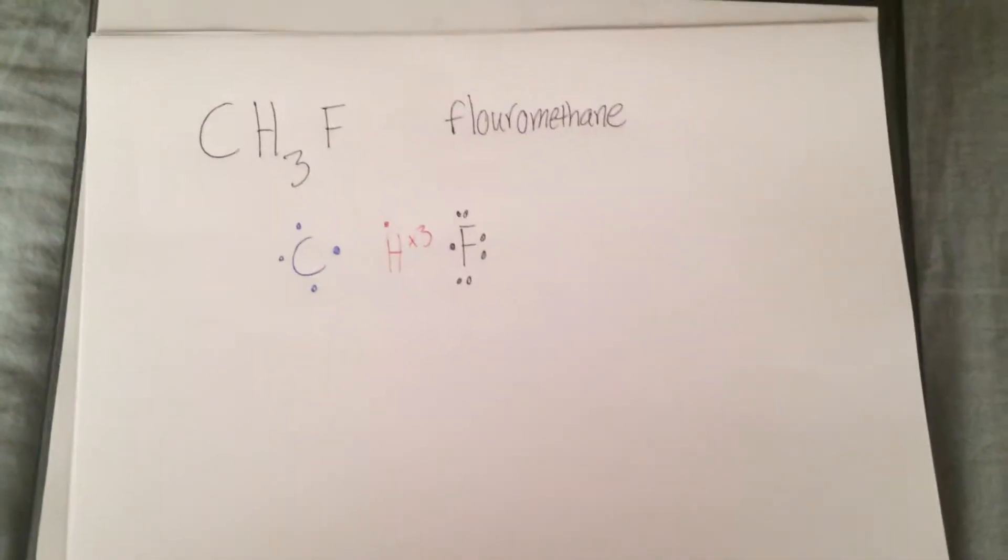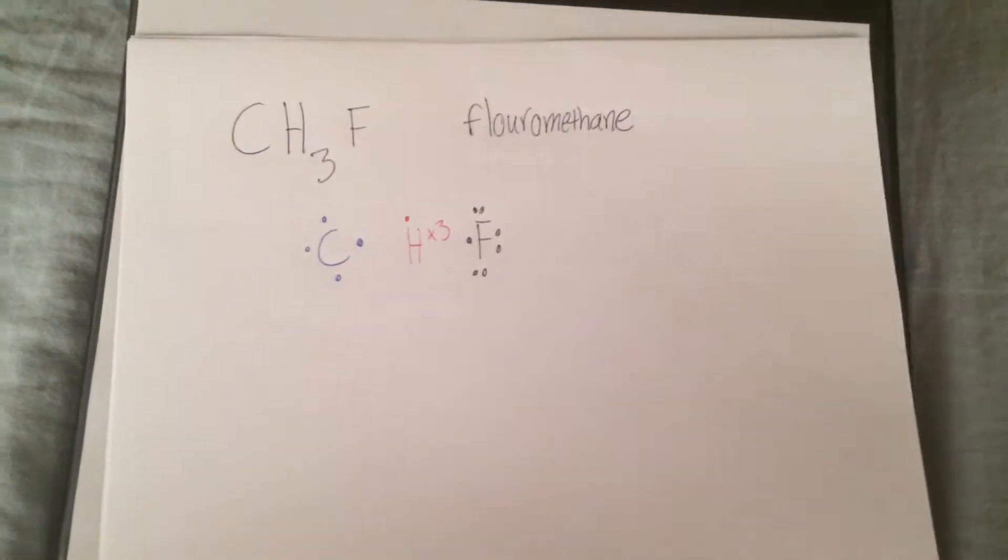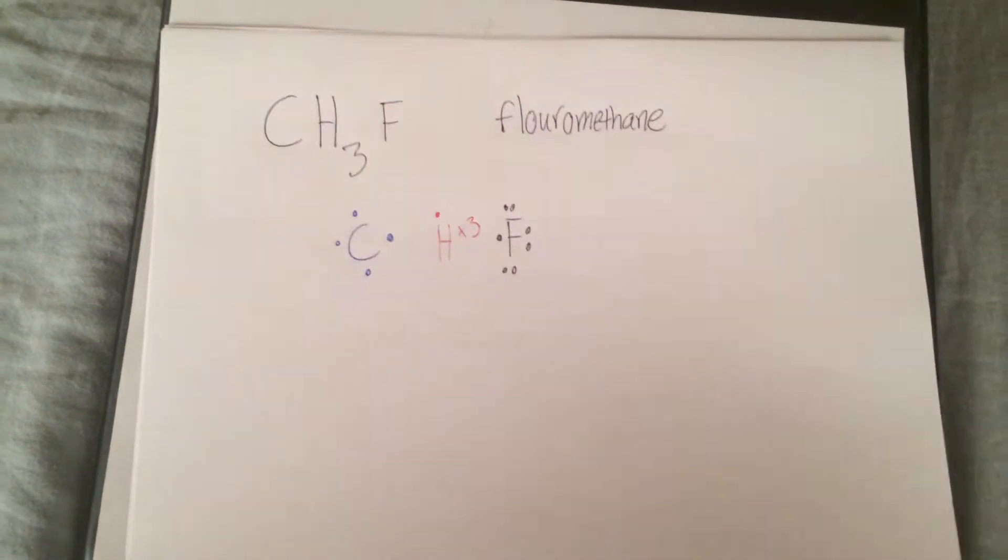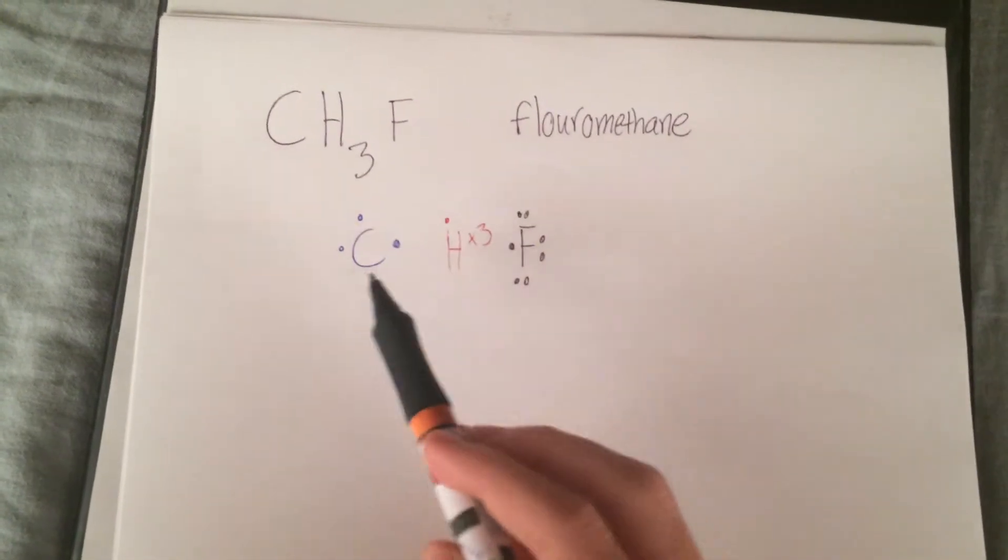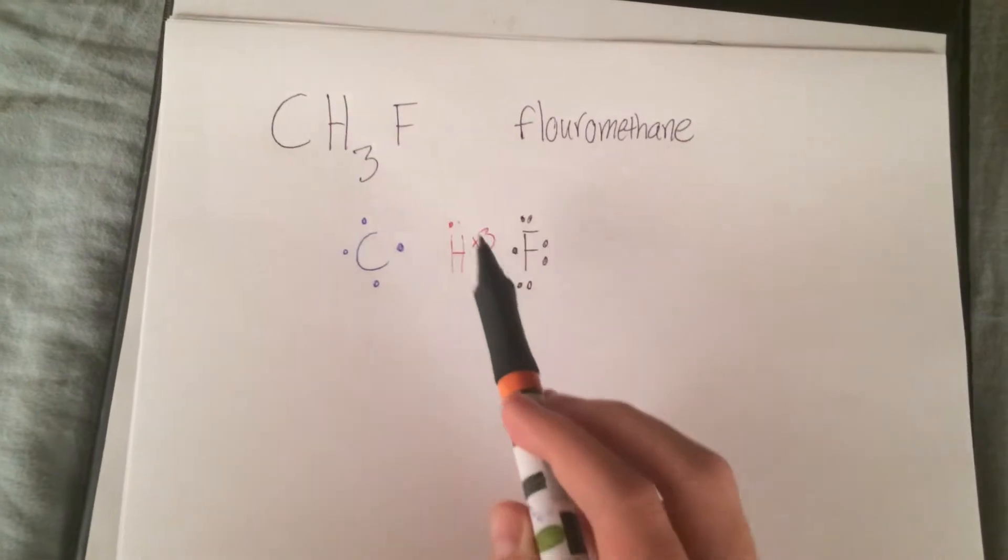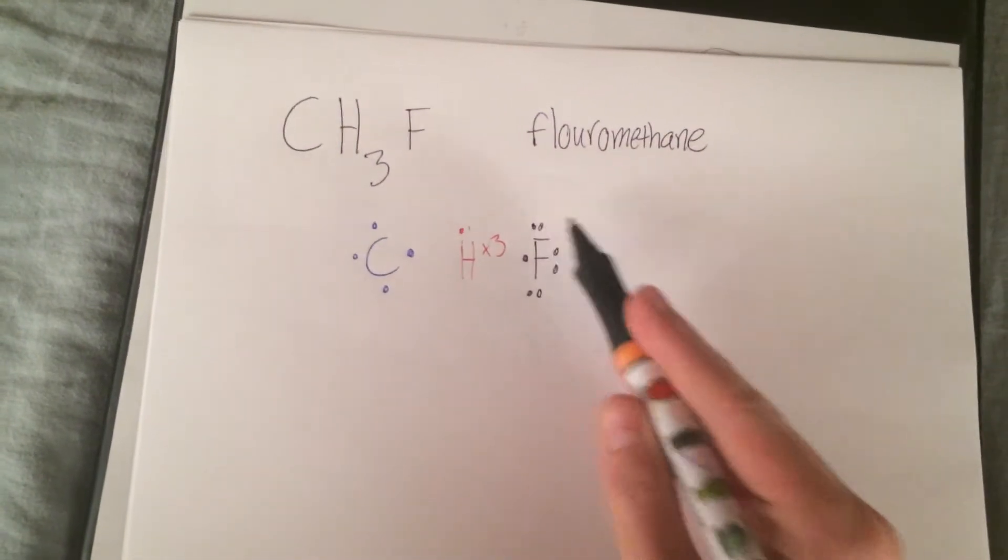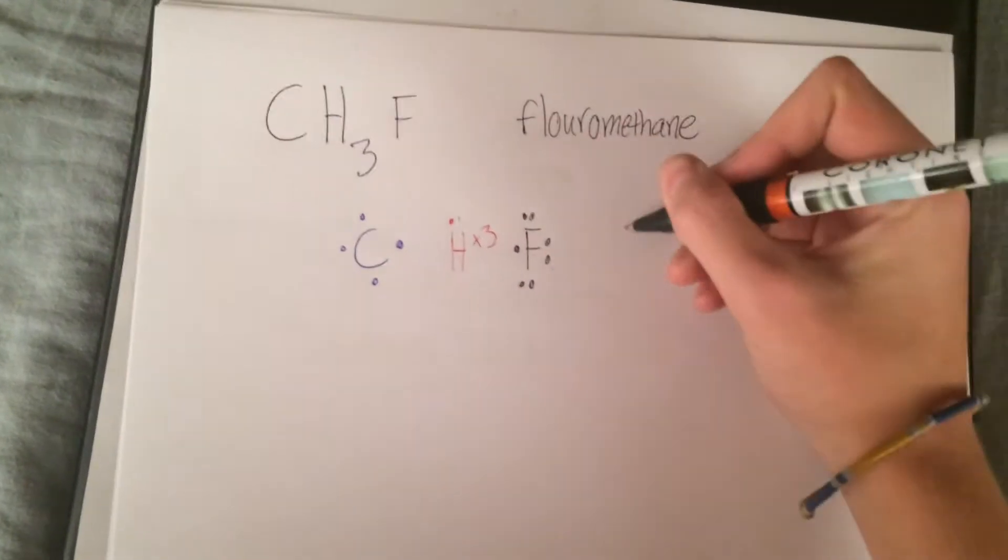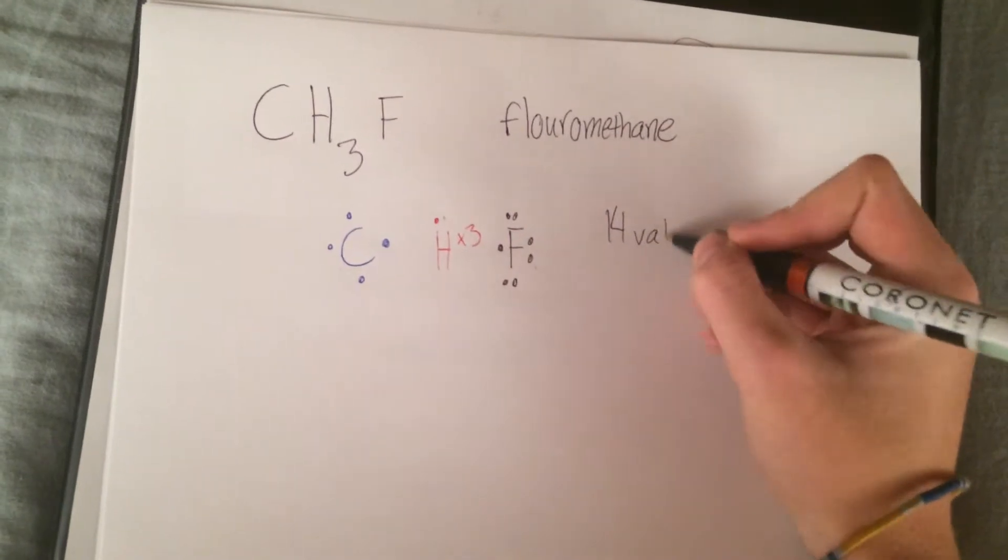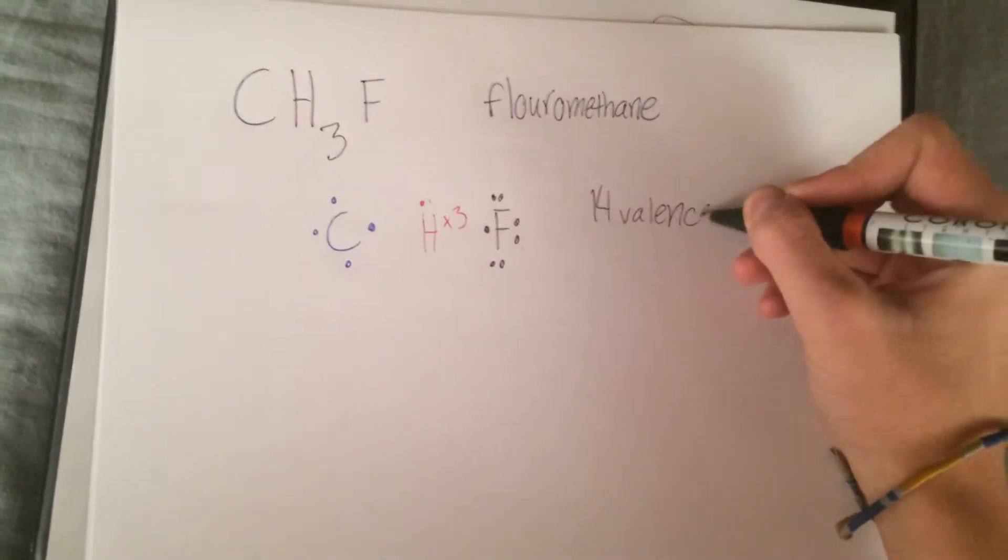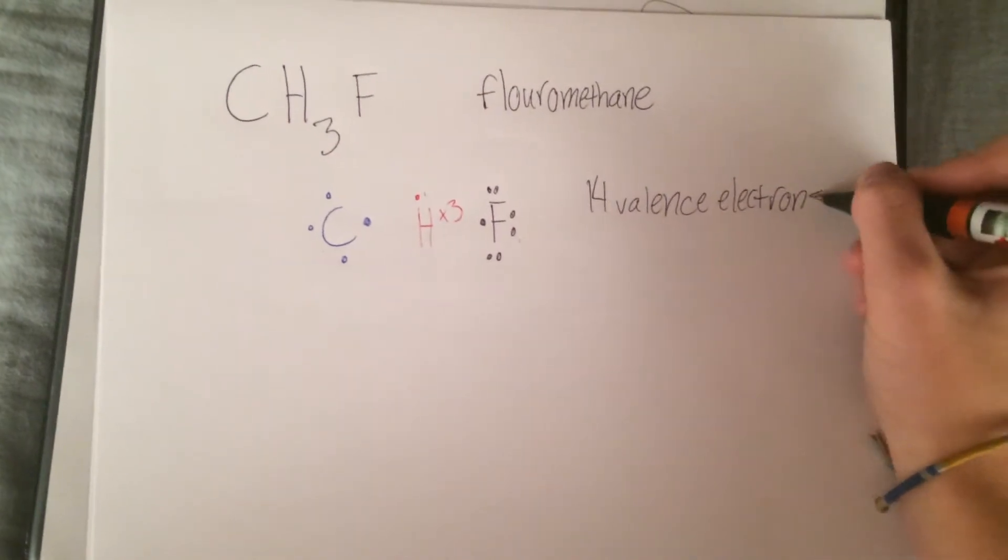To find out how many bonds are in this molecule's Lewis dot diagram, you have to find the total amount of valence electrons, which as you can see is one, two, three, four, five times three, six, seven, eight, nine, ten, eleven, twelve, thirteen, fourteen. You then divide this number by two to get seven pairs.